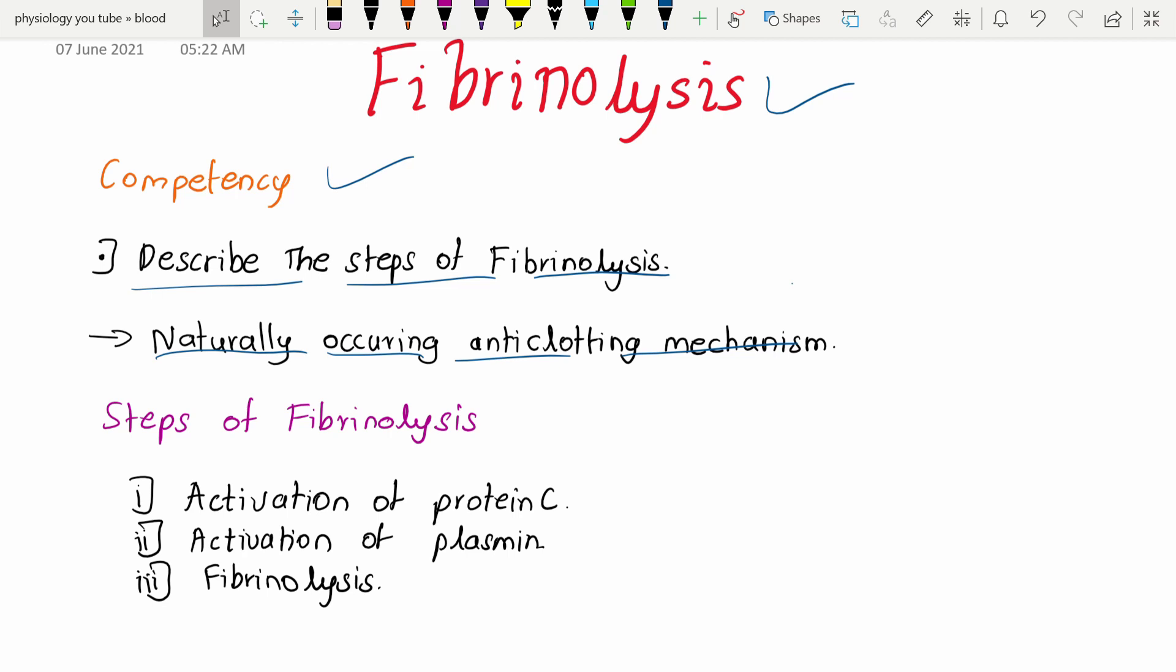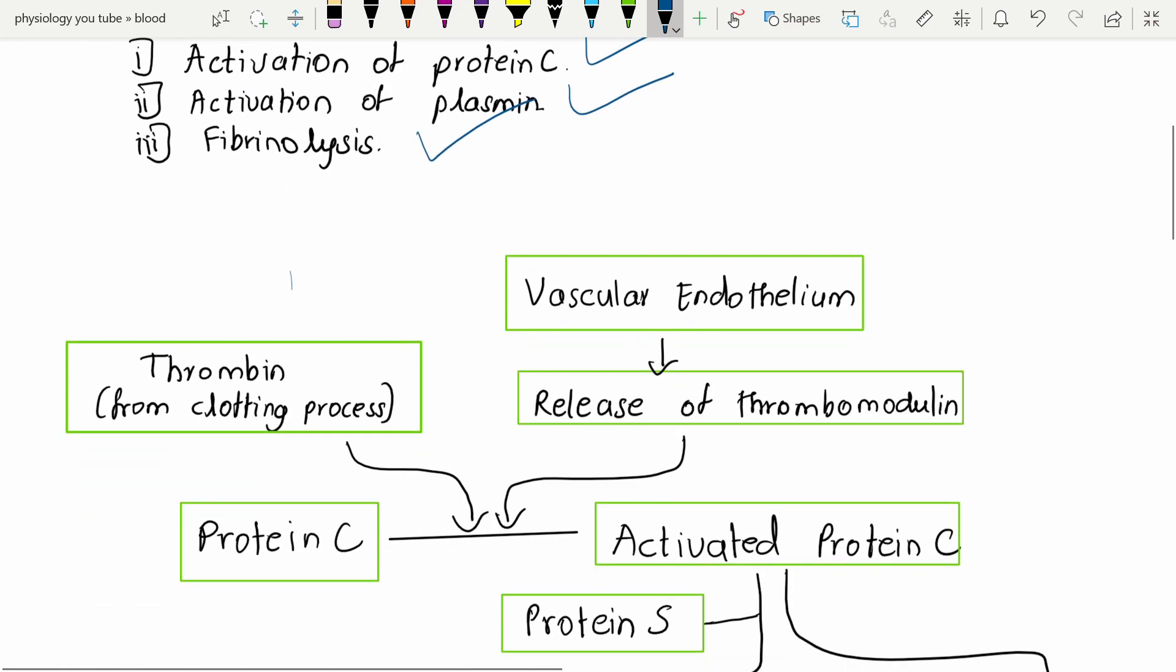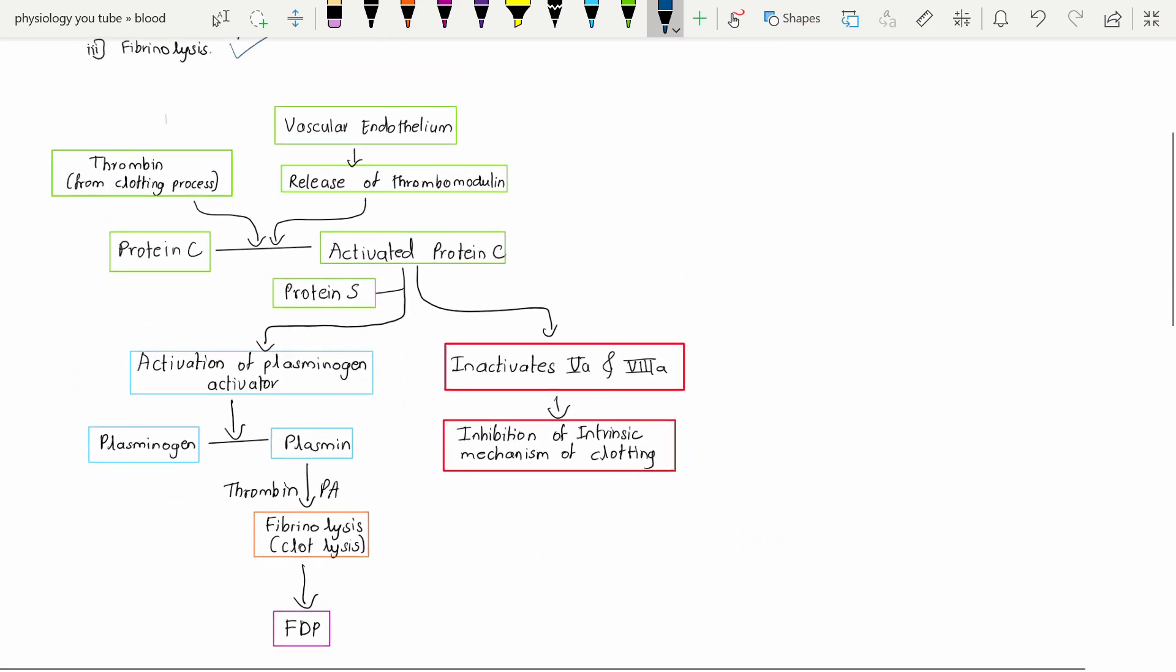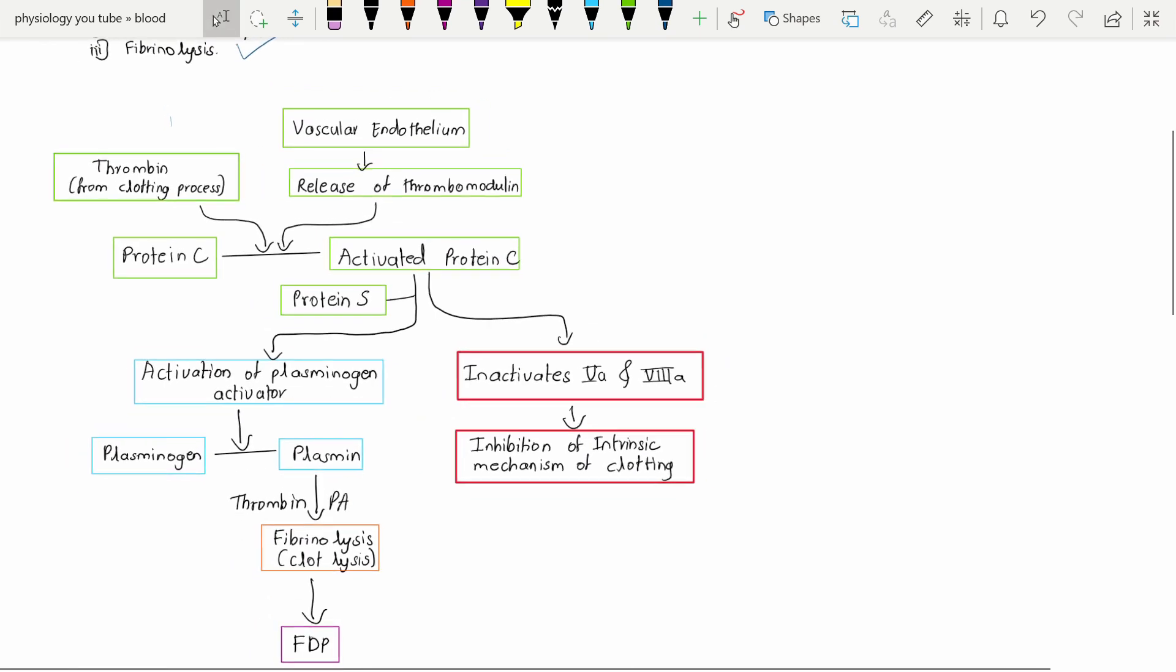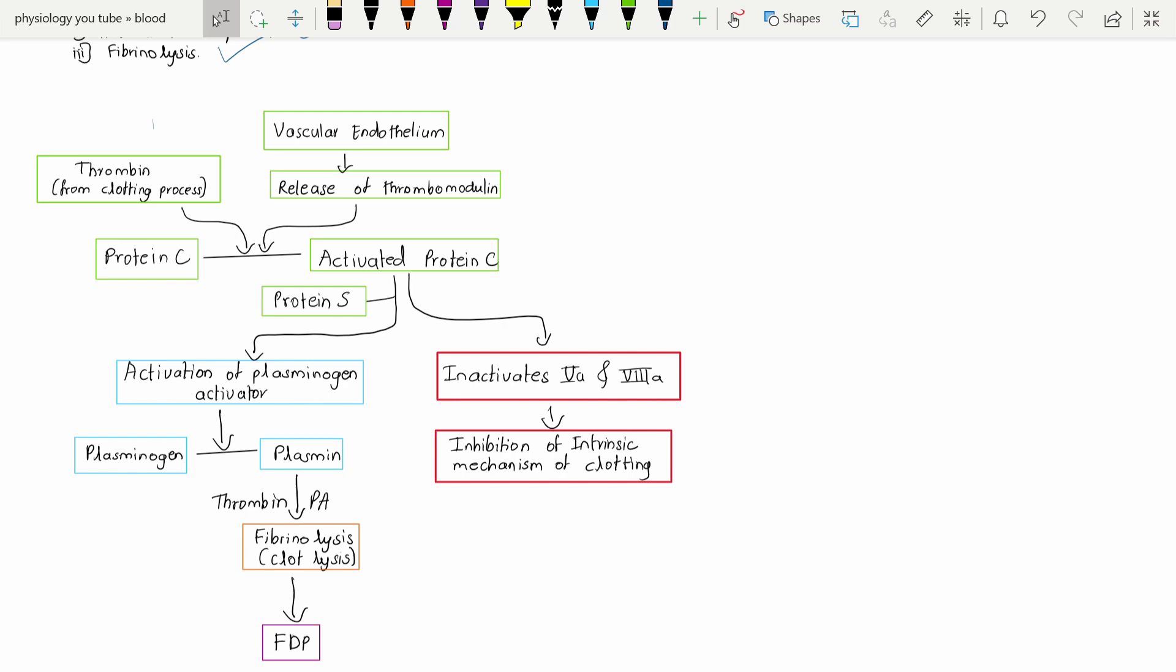There are mainly three steps involved in the process of fibrinolysis. First is activation of the protein C, then the activation of the plasmin, and finally the step of fibrinolysis. Before discussing those three steps, I made this chart, copied from the GK Park.